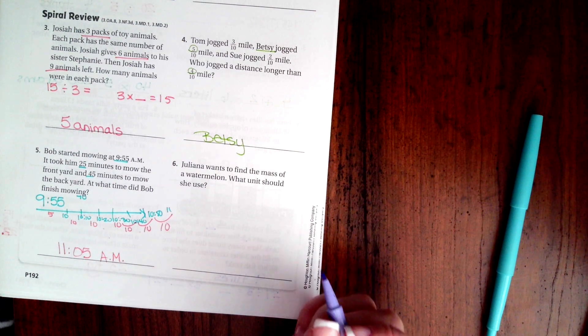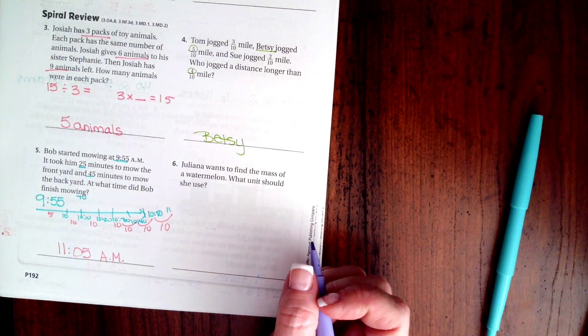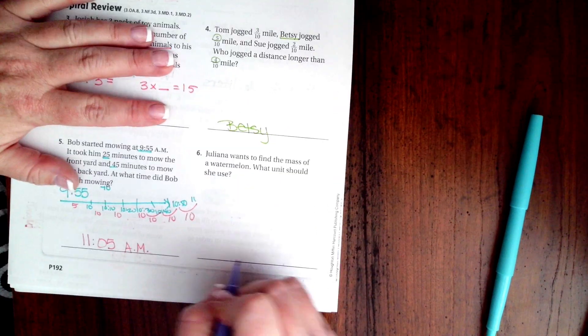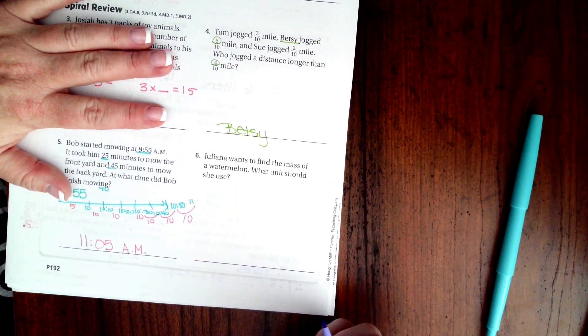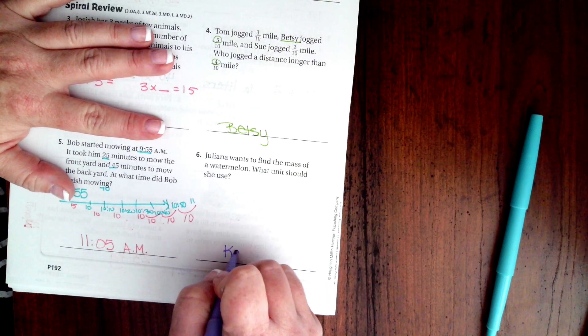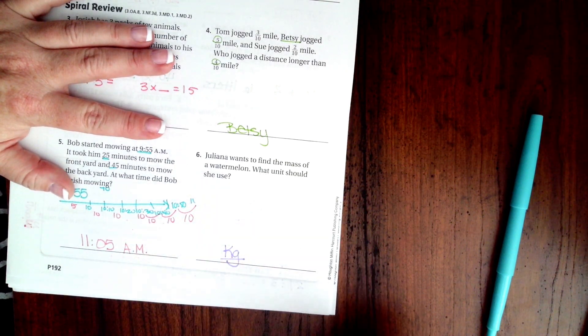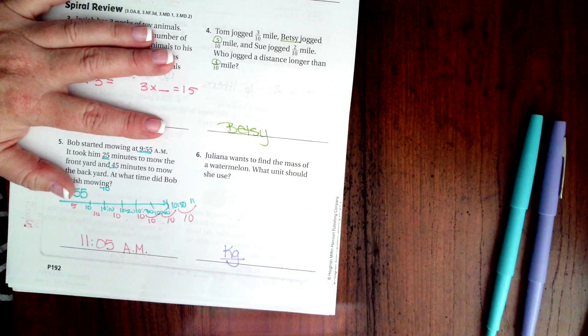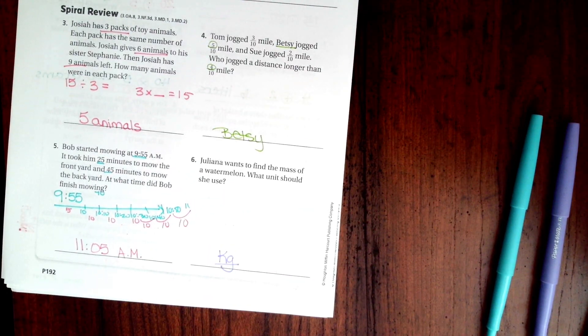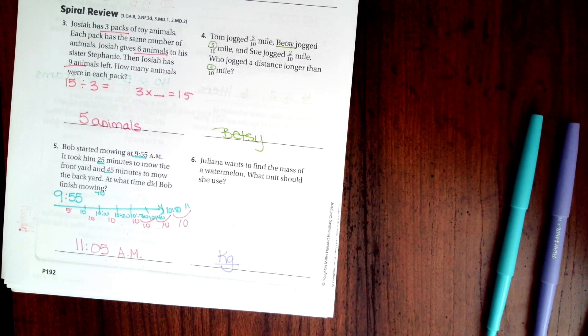Last one, guys. Juliana wants to find the mass of a watermelon. What unit should she use? Well, I would weigh that in something like pounds, which means kilograms, since we're doing metric units. Kilograms would be our best bet. All right, guys. Thanks for hanging out for chapter 10. Come on back for chapter 11. See you soon.